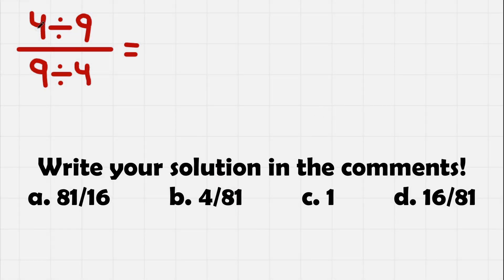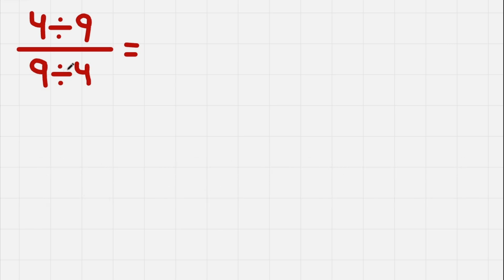Today we have a problem: 4 divided by 9 over 9 divided by 4. We have 3 divisions over here and we need to do something with it. We cannot actually divide everything because we'll get an uneven decimal.